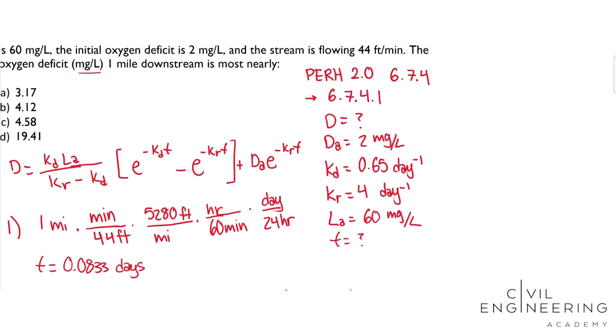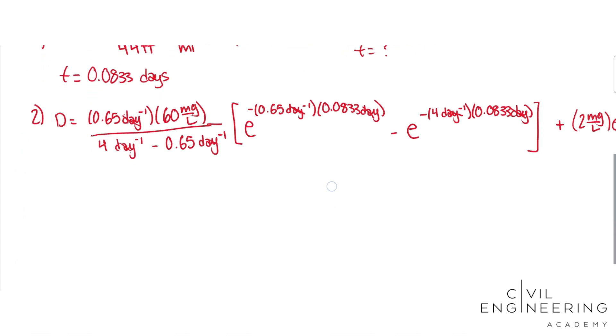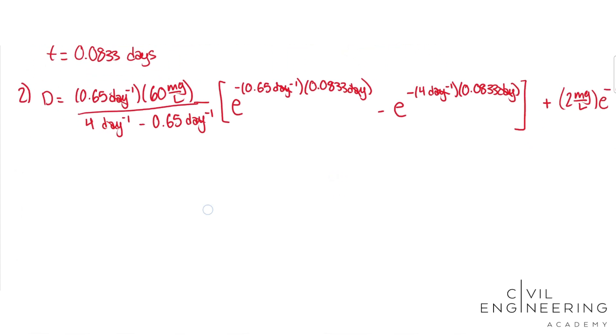If we just plug this into the calculator, we'll get D is equal to 11.64 milligrams per liter times 0.947 minus 0.716 plus 1.433 milligrams per liter. And all of that is going to equal 4.116 milligrams per liter, which is about 4.12 milligrams per liter.